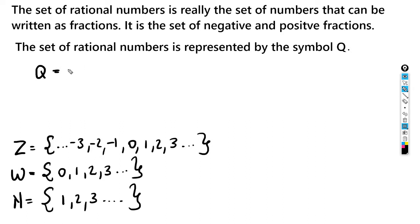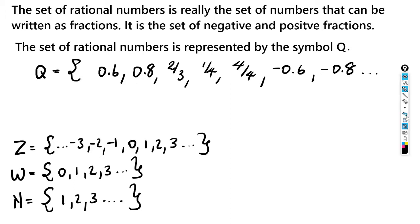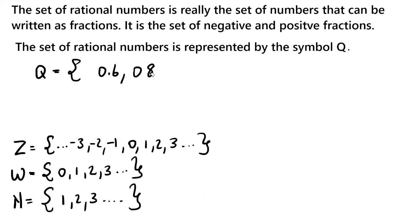Let's think about all the things actually in the set Q. Decimals are in the set — 0.6 and 0.8 would be in there because decimals are just a different way of writing fractions. So 2/3, 1/4, 4/4 (which equals 1) are all in there, along with all their negative counterparts like -0.8 and so on.